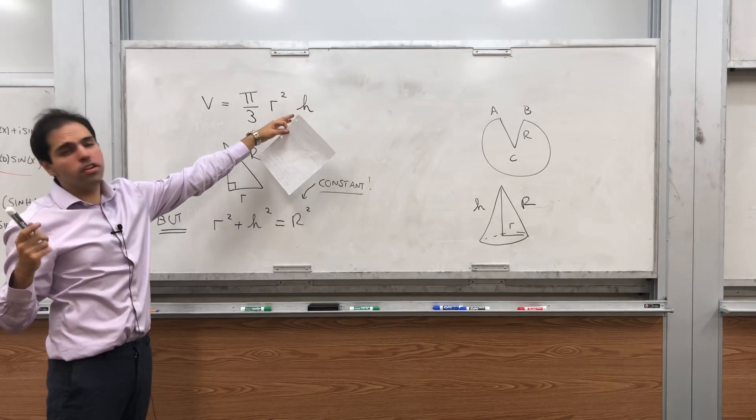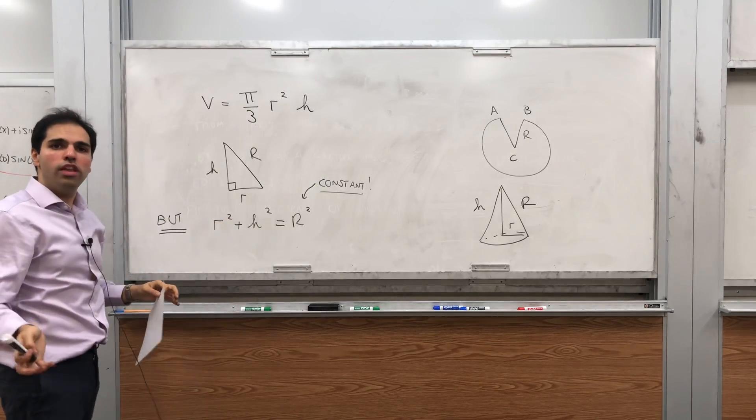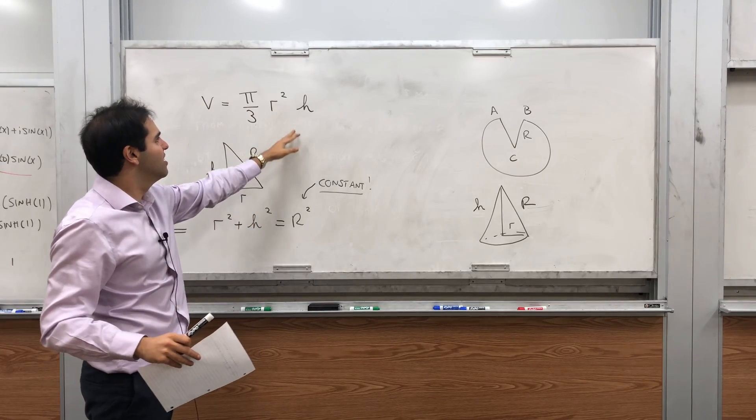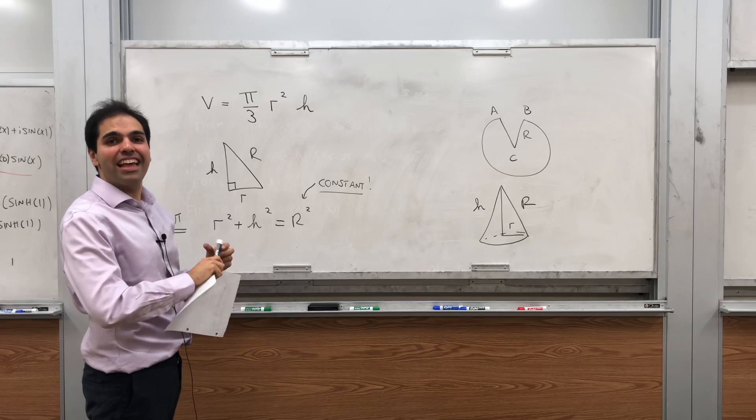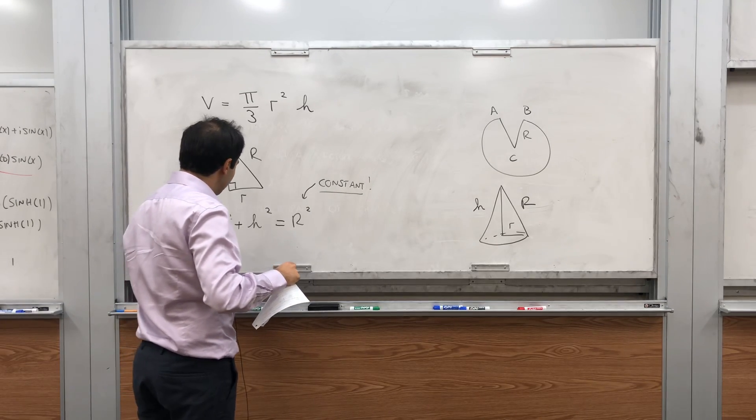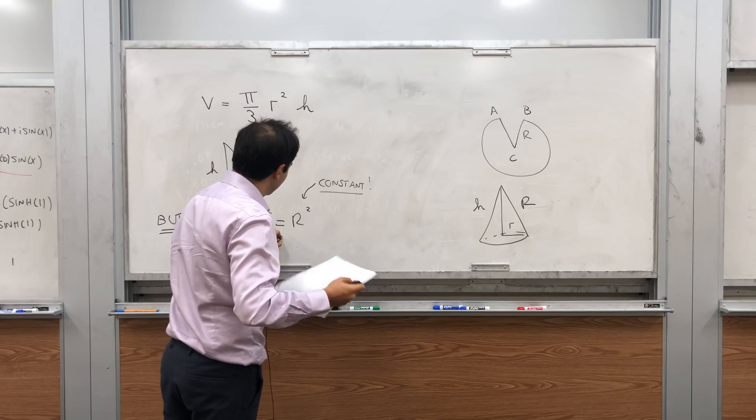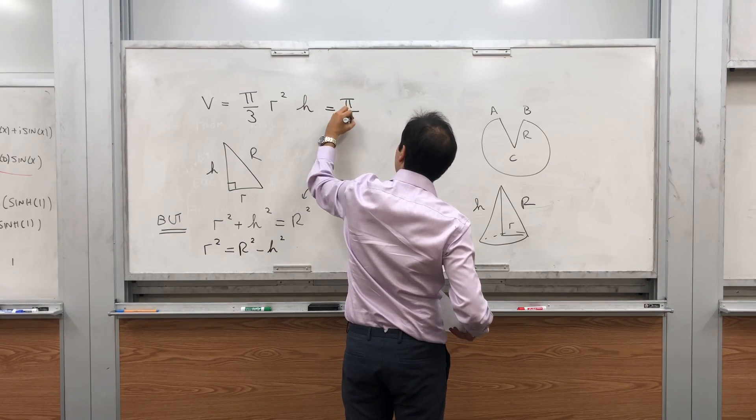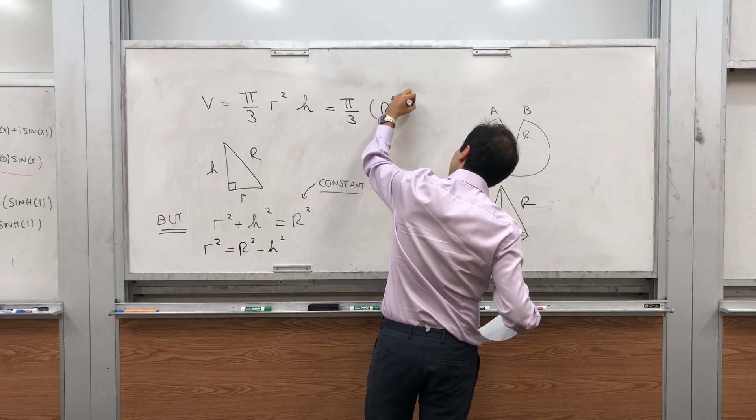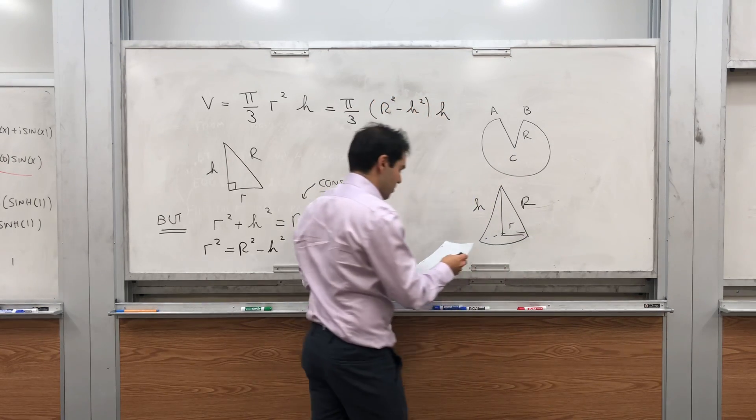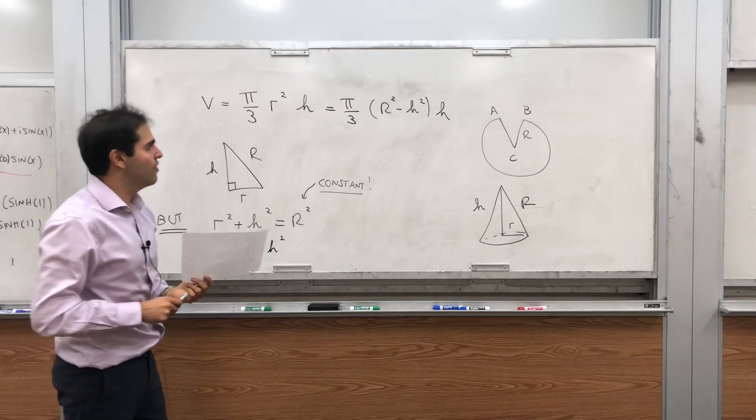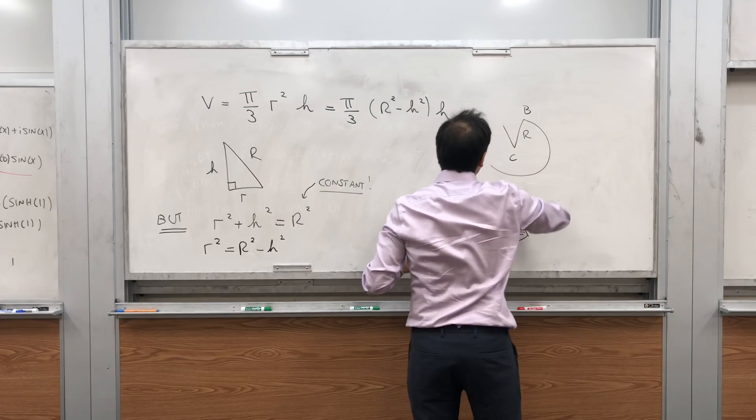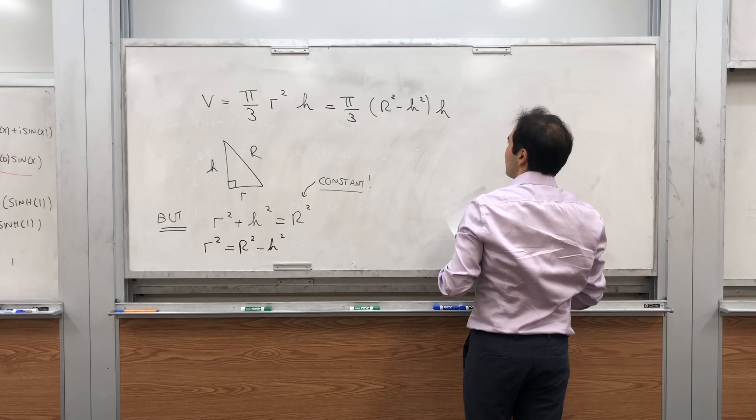but that's a big problem because then you have square roots. You could do that, you might be a bit of a sadist or something if you do that, but don't hurt yourself. Instead, let's solve for r squared. So r squared is big R squared minus h squared. And so this volume becomes pi over 3 big R squared minus little h squared times h. And the good thing is now we have a legit function. So our function becomes pi over 3 big R squared h minus pi over 3 h cubed.